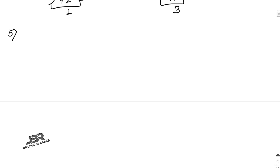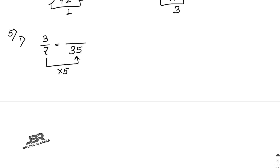Sum number 5: fill in the missing number in the equivalent fractions. The first one is 3 by 7 equals blank by 35. Since 7 multiplied by 5 gives 35, multiply the numerator by 5 as well: 3 into 5 is 15. So the answer is 15.